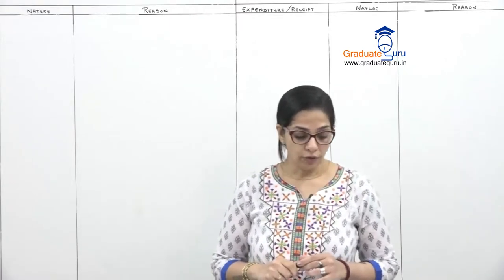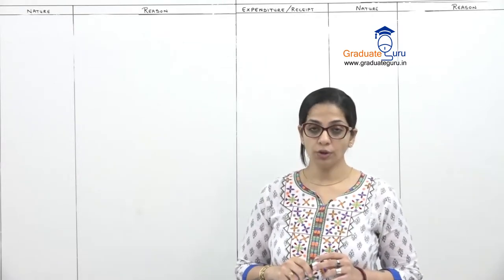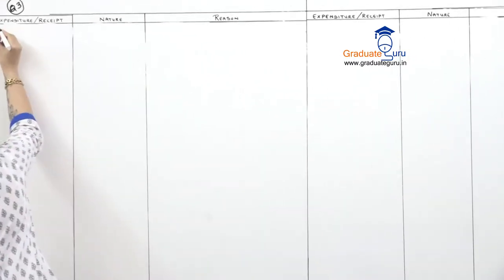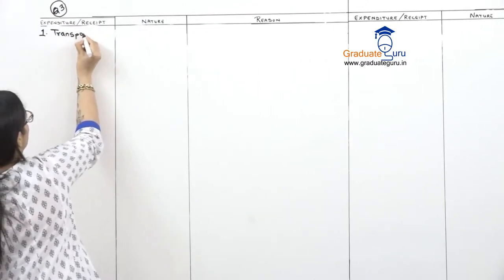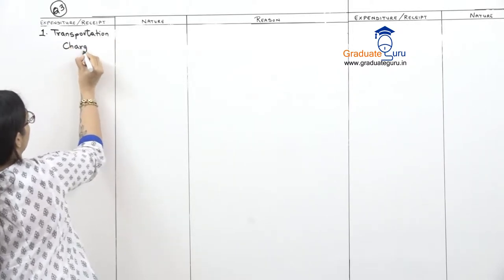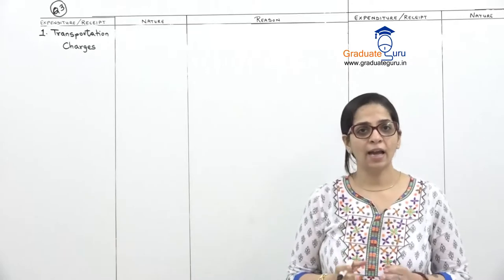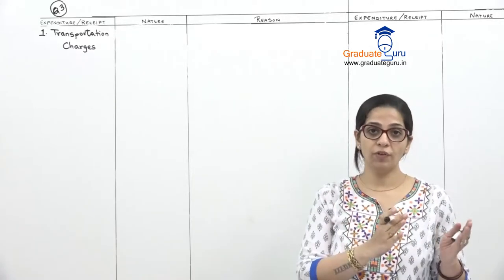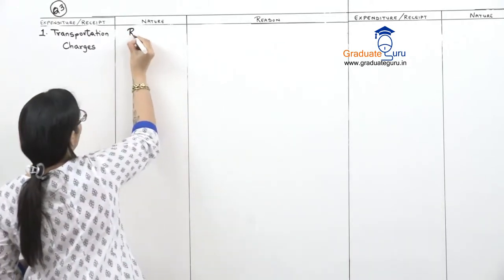Question 3, first item: cost of 10,000 for hiring a truck to transport goods from factory to shop. So this is transportation charges — we are paying for bringing goods from the factory to the shop. This is obviously our normal trading activity because it is in relation to goods. So we classify it as revenue expense.